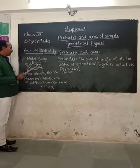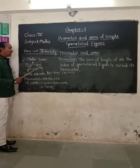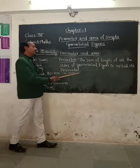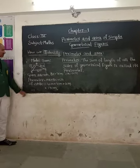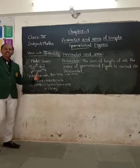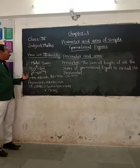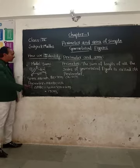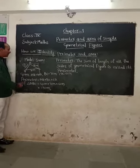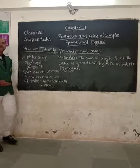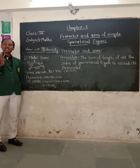The sum of the lengths of all the sides of a geometrical figure is called its perimeter. Here, in your textbook, one model sum is given. I have already drawn triangle ABC. This plane figure is called a triangle, and a triangle always has three sides and three corners.